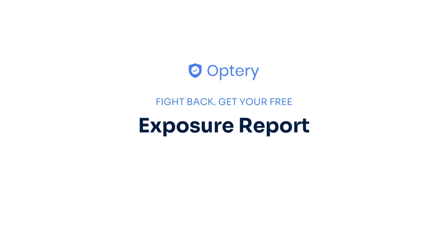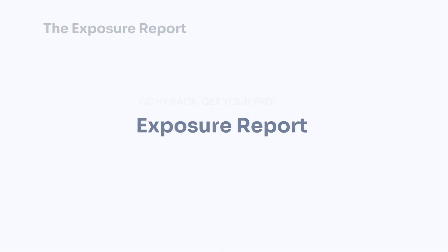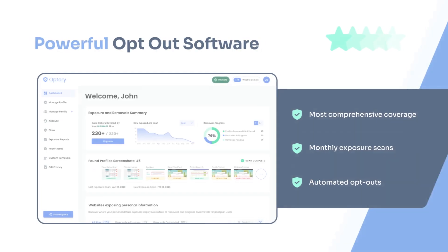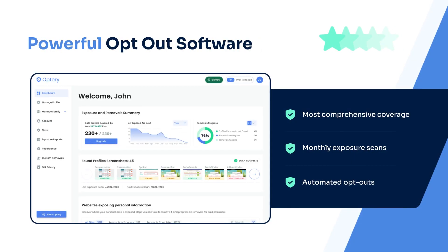That is why Optry offers the free exposure report. The exposure report shows screenshots from sites that have your data, with links to let you see that data right on the site. Use the exposure report and our how-to guides to opt yourself out for free, or sign up for an Optry paid plan and Optry will handle the monitoring and removals for you and your family members.